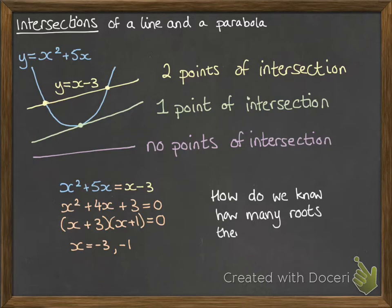So the question then comes up with, how do we know how many roots there are? How do we know if there are two points of intersection, one point of intersection, or none? And it's by looking at that equation, when we put them equal to each other, we can find out how many solutions of that equation there are, which would tell us how many points of intersection there are.